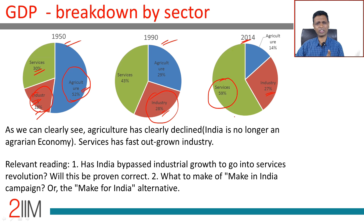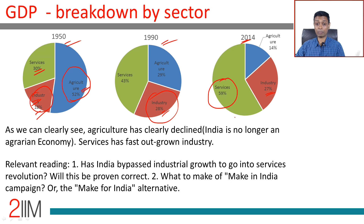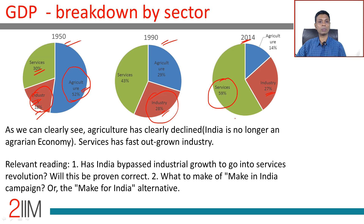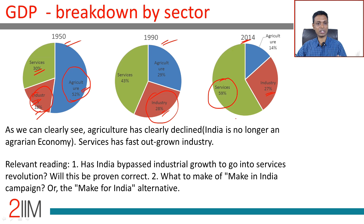In some senses, you'll hear the discussion that India has bypassed the industrial revolution — the industry-led growth phase. We were an agrarian economy, we barely picked up the industrial phase, and now we are predominantly a services-led economy. The question is: has India bypassed industry-led growth? Do we need to stimulate the industrial segment? Do we need to 'Make in India' rather than importing finished goods? Those are things you should read about.